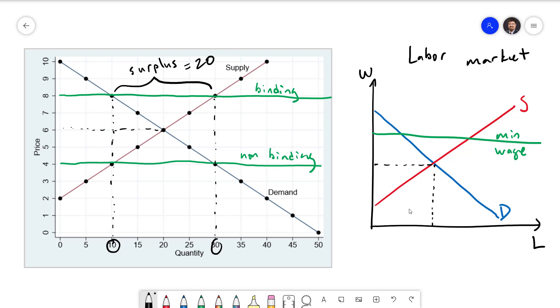When the minimum wage is binding, we get a surplus of labor. There are more people looking for jobs than there are people willing to hire. When there is a surplus in the labor market, that's where we get unemployment.